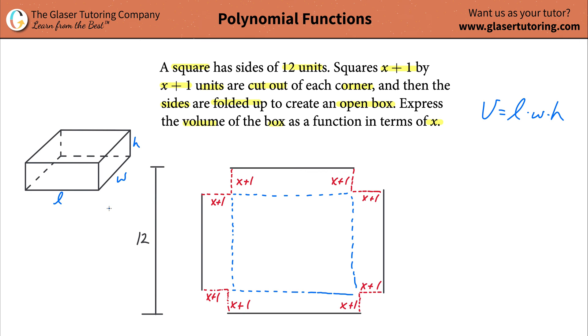Now the goal is, the last sentence says express the volume of the box. So now you have to know what's the formula for the volume of a box? It's just the volume of a rectangular prism. It's simply going to be the length times the width times the height. So that means I need to know the length of the box, the width of the box, and the height of the box.